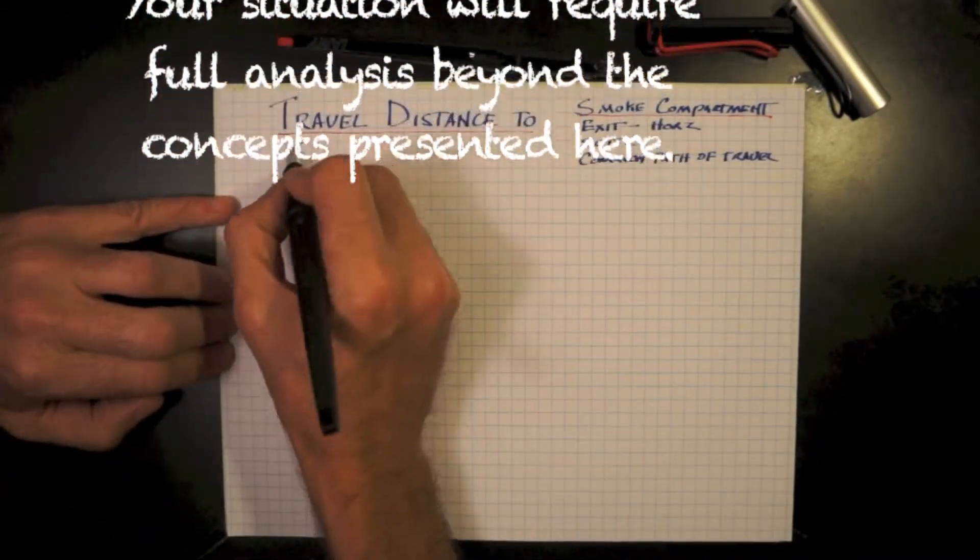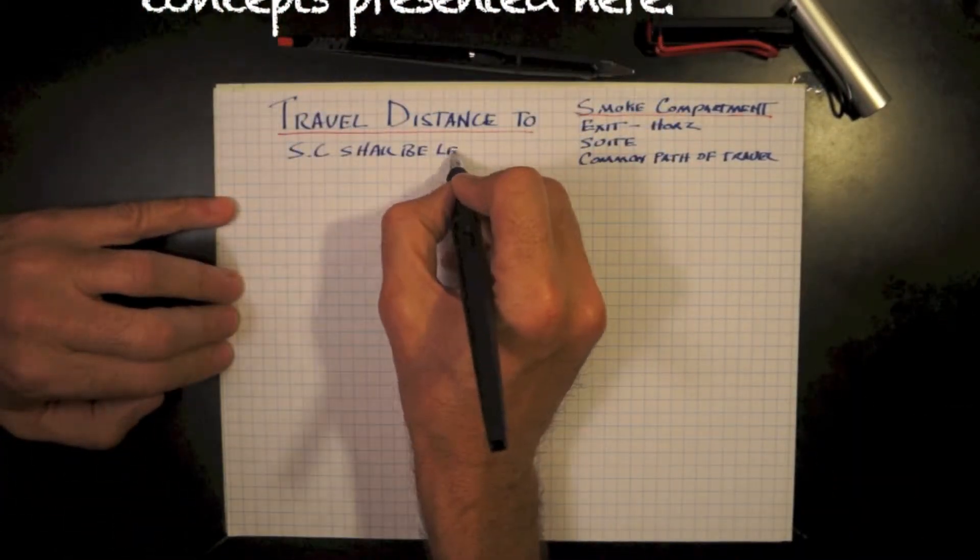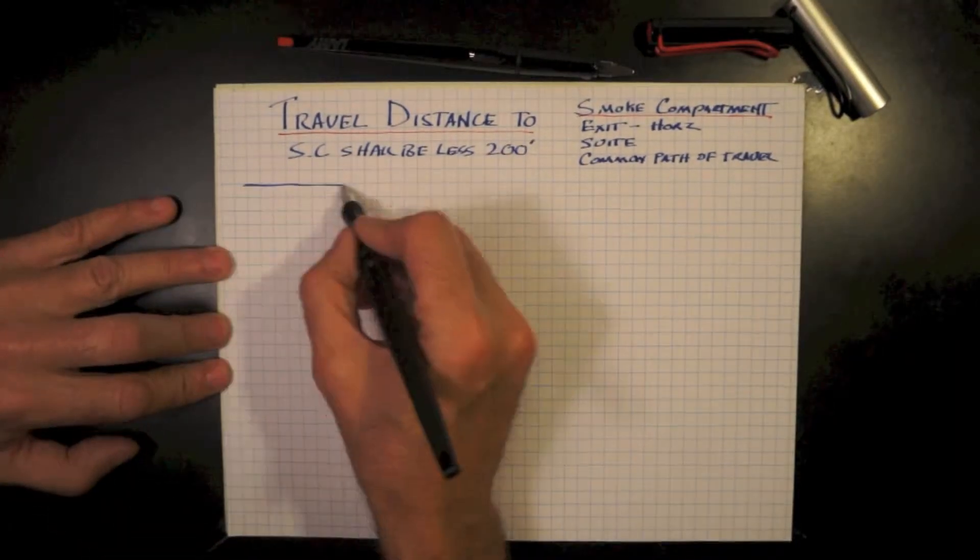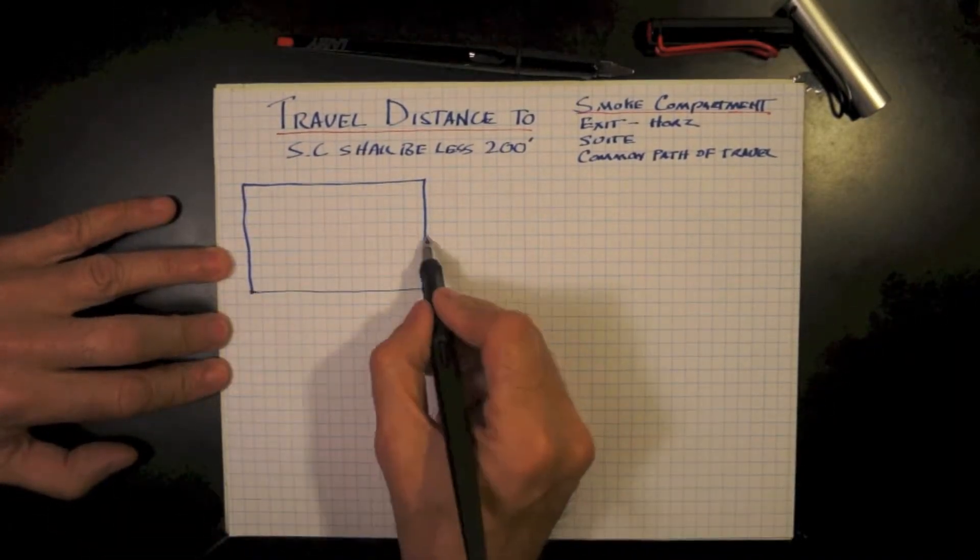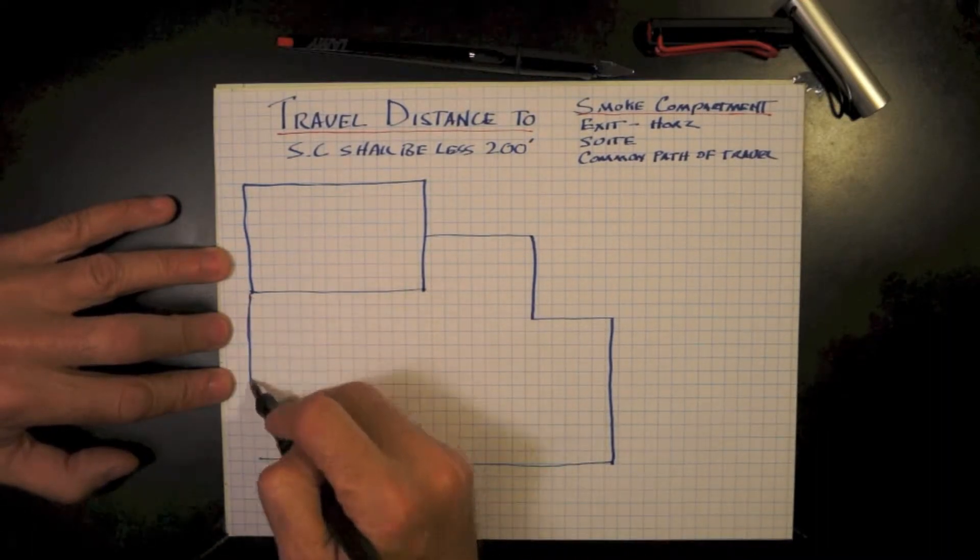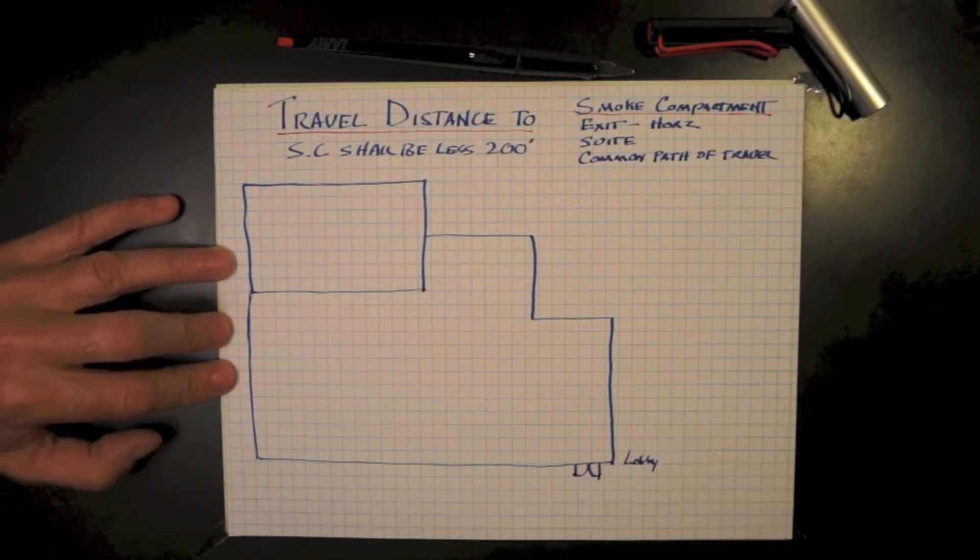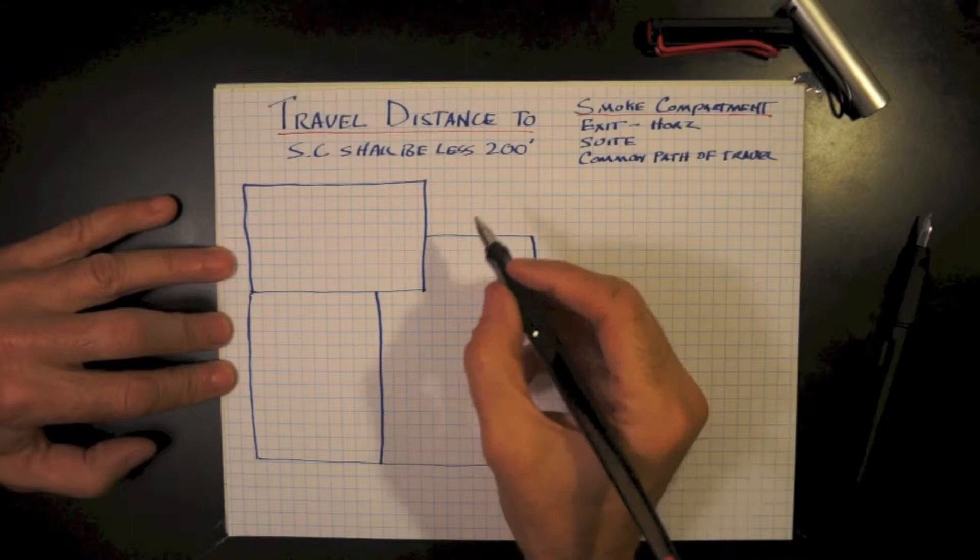Travel distance to a smoke compartment. Travel distance to a smoke compartment shall be less than 200 feet. Let's start off with a general shape of a building, a lobby, entrance, and smoke compartment walls.